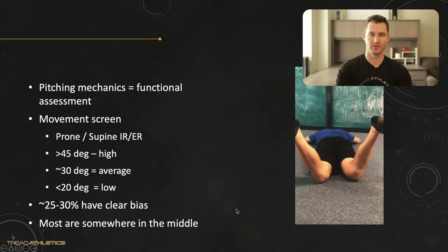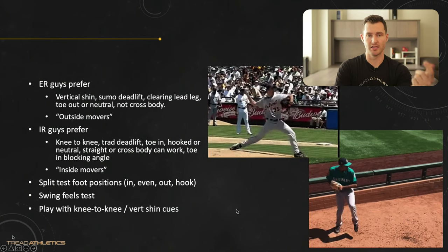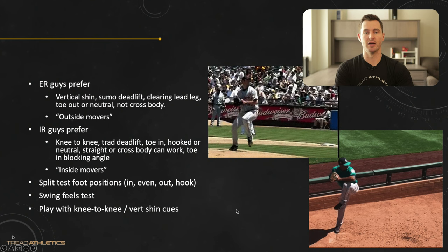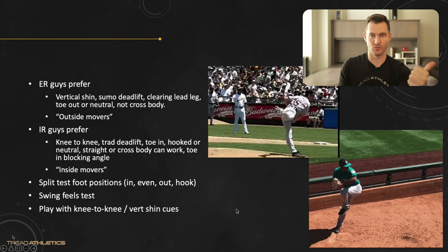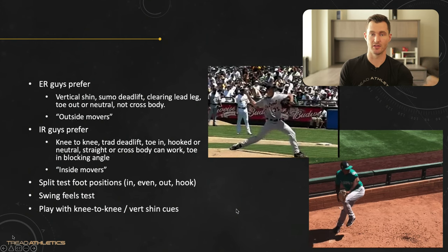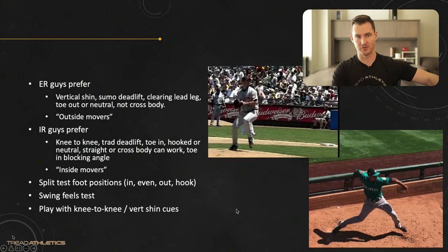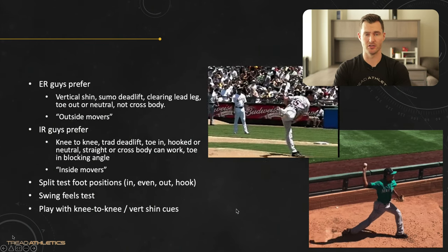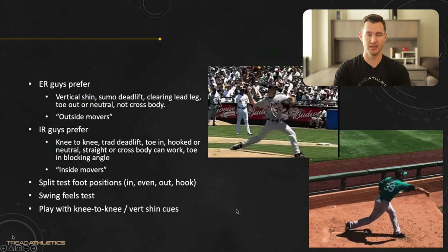So what do you do if you're in the middle? Guys who are more external rotation dominant are what we consider outside movers. The way they prefer to produce rotational torque is more towards the outside of their feet. These guys work well with the vertical shin cue. A lot of coaches teach this because that's how they threw — but that doesn't work for pitchers with a different hip structure. Justin Verlander is a good example: as he loads, he keeps that vertical shin and his feet are almost facing away from each other.